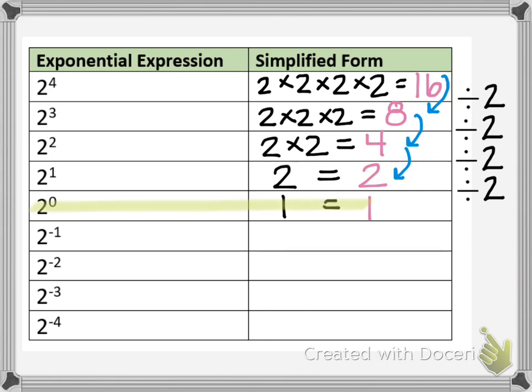That's our zero exponent rule: any base raised to a zero power is always going to equal 1. I could have created this table with any base — 4 to the fourth, 4 to the third, 4 to the second, 4 to the first, 4 to the zero — and I still would have wound up at 1.